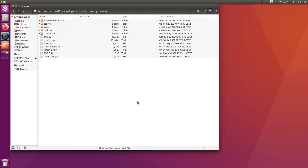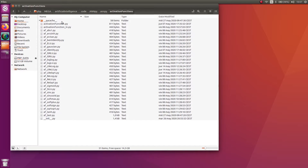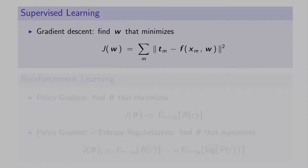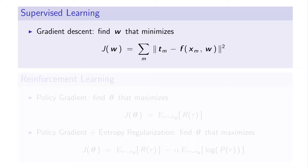I have written code to train an artificial neural network using different activation functions and two different paradigms: supervised learning and reinforcement learning. To train in the supervised learning paradigm, I used the well-known backpropagation algorithm with the mean square error as the loss function, and some other details mentioned in the video description.